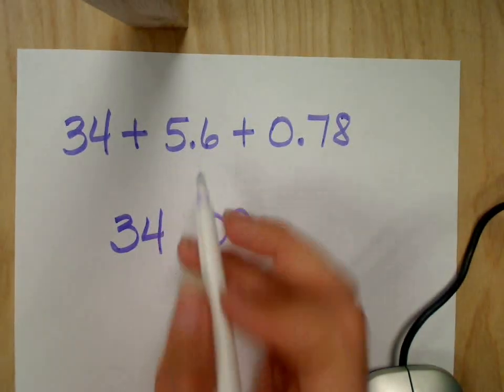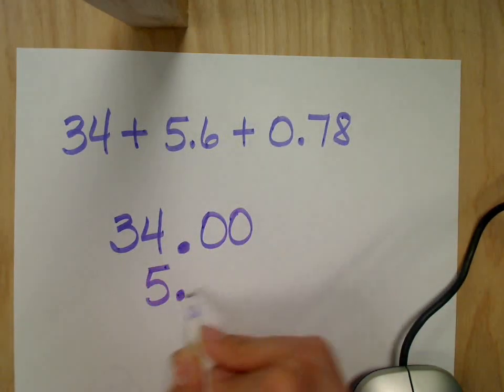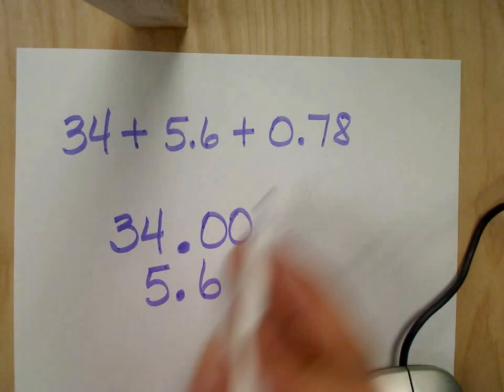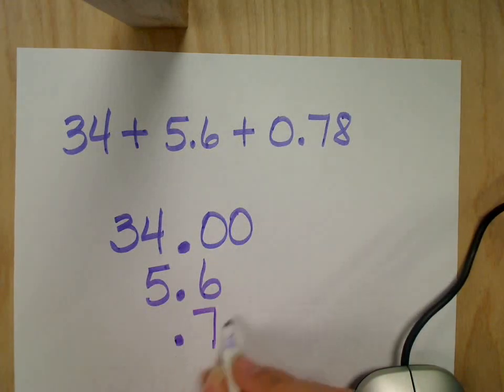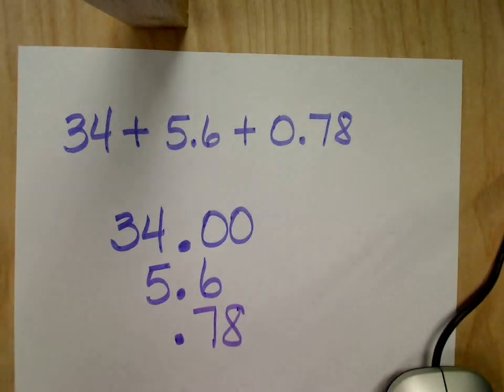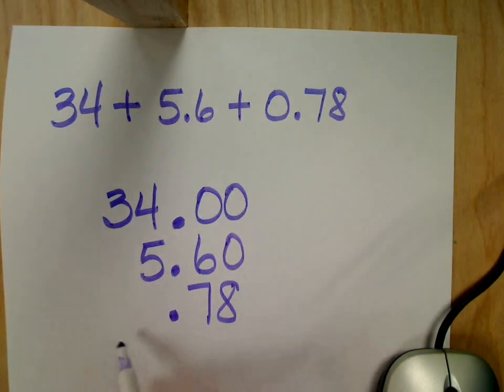And then I have 5 and 6 tenths. Line up the decimals. Yes, line up my decimals. And then I have 78 hundredths. I can fill in this empty spot with a 0. And now I'm lined up and ready to go.